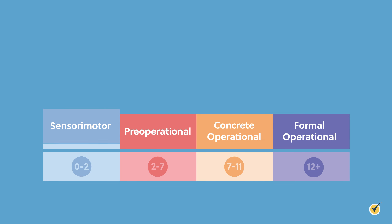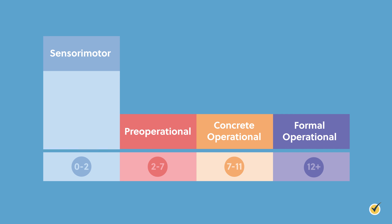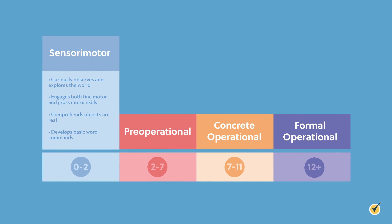During the sensorimotor stage, a child between the ages of zero and two years old will curiously observe and explore the world around them. Using their five senses, the child engages both fine motor and gross motor skills, comprehending that objects are real and will start to develop basic word commands for expressing needs. Examples might include putting objects in the mouth for sensory input, grabbing and pulling objects to further explore, and saying words such as dada, mama, ball, yes, or no.